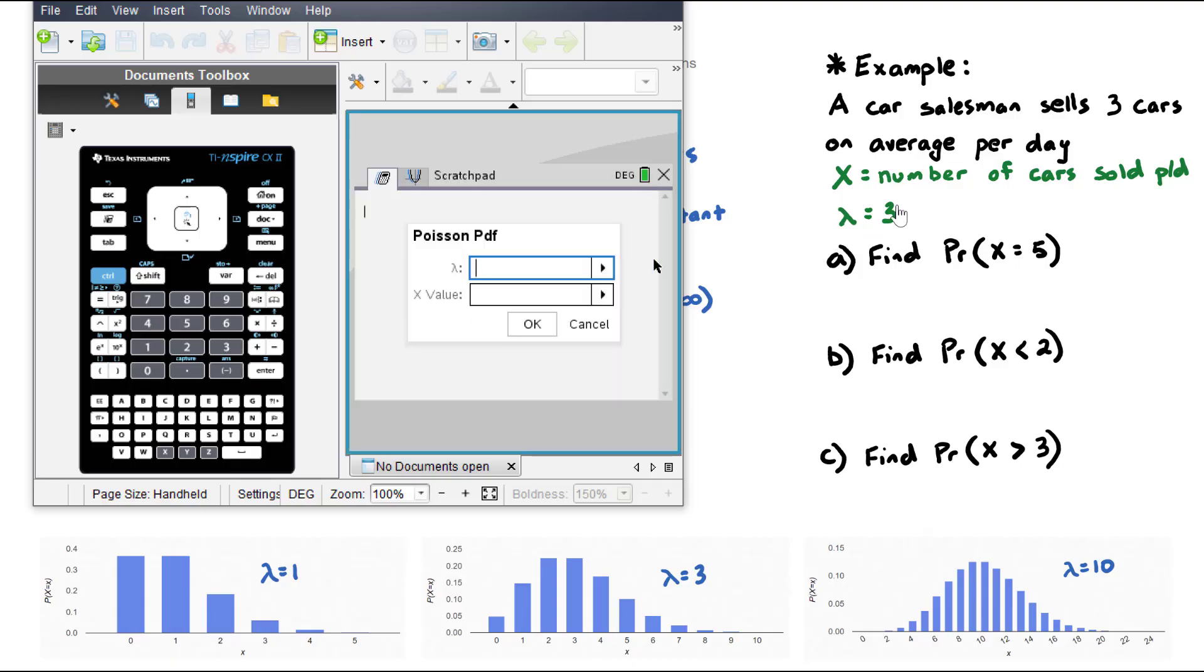Our lambda, it asks us for what is the expected number, that is three. And our X value is, what are you looking for? In this case it's five. Hit enter, and that's our probability there: 0.101, rounded to three significant figures.